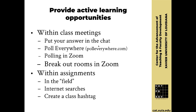Moving on — the second principle is providing active learning opportunities. With active learning, I'll talk about two areas: within your class meetings, since our policy is to hold synchronous classes, and within your assignments. I'll caution us that we only have a month of class left, so within your class meetings and lectures, look for opportunities to have engagement triggers that involve active learning.